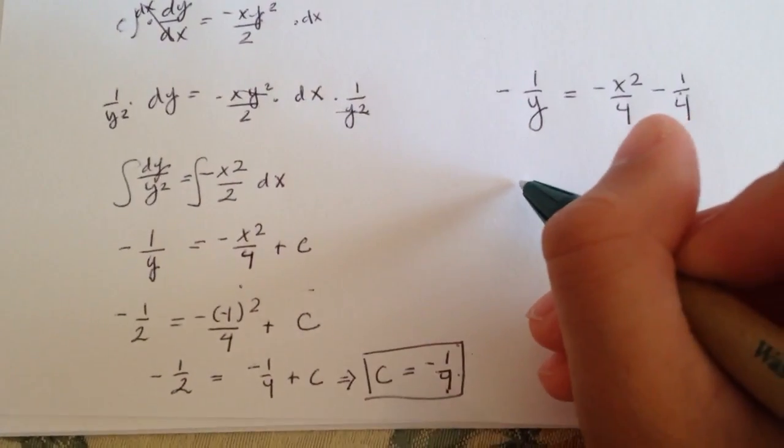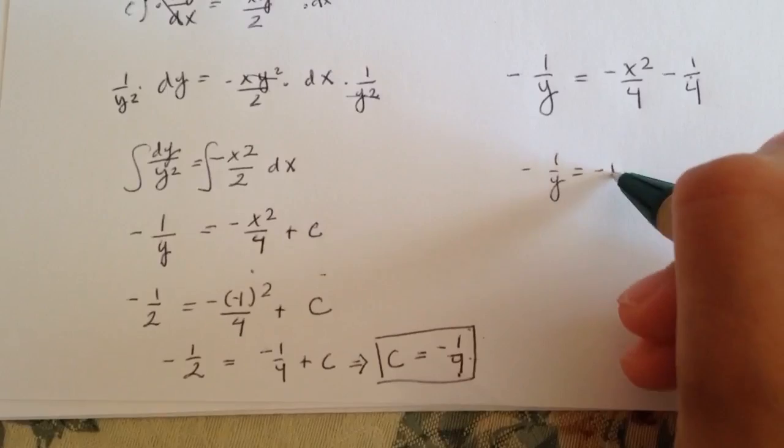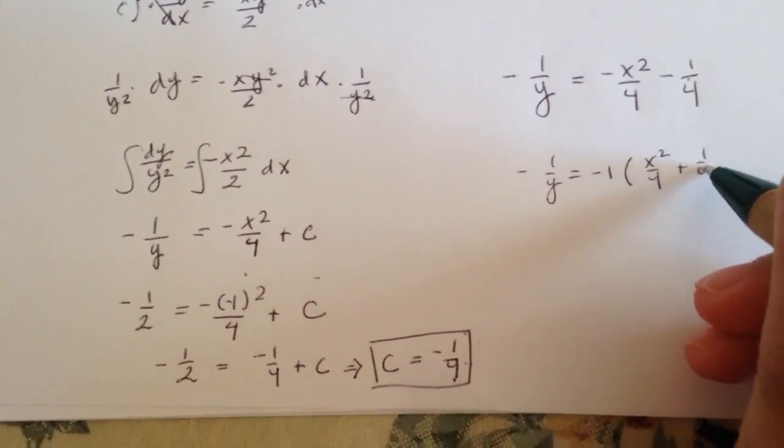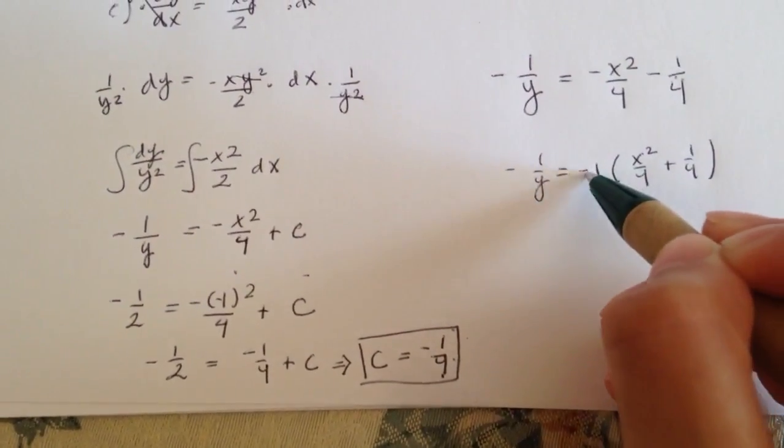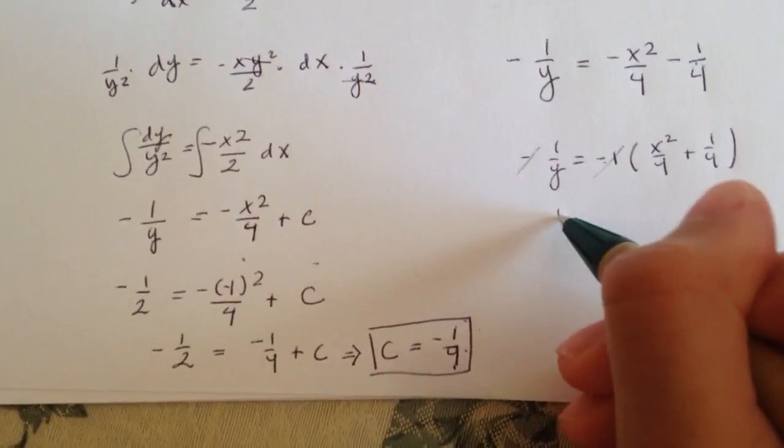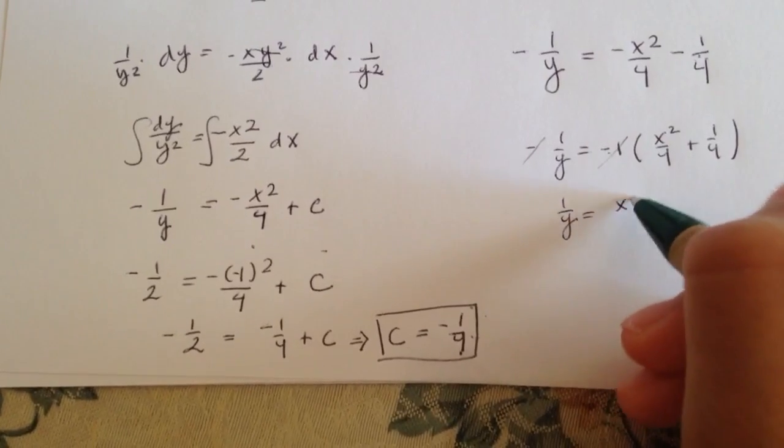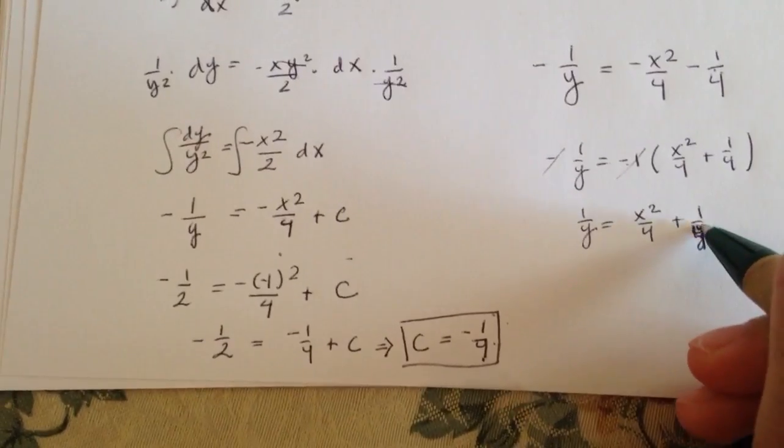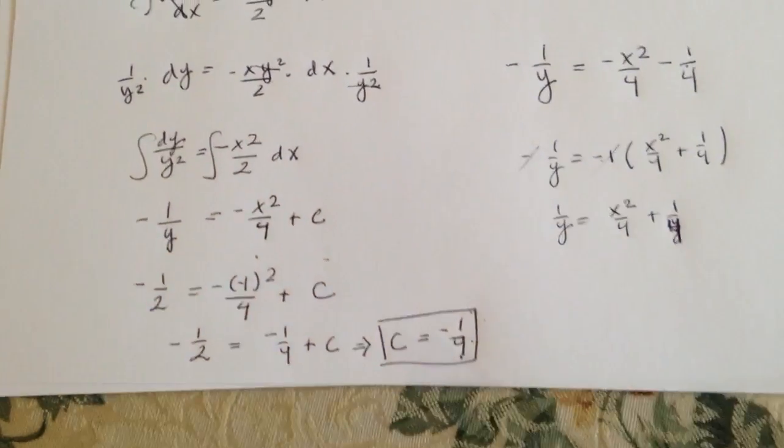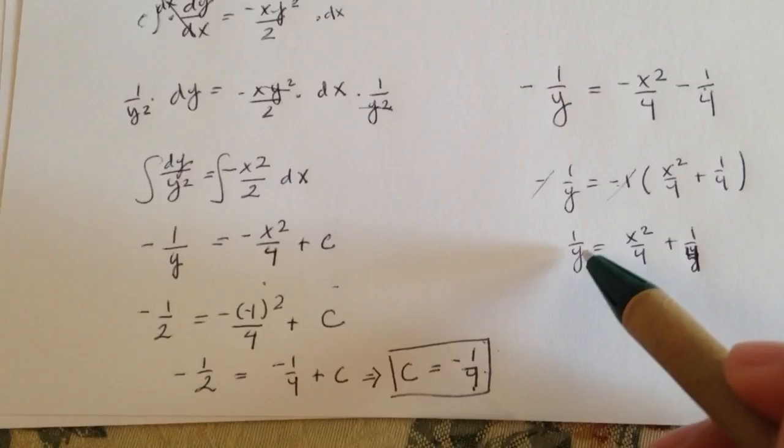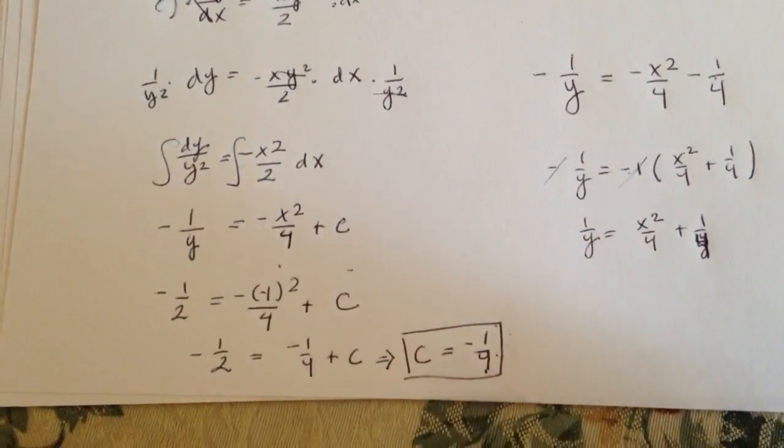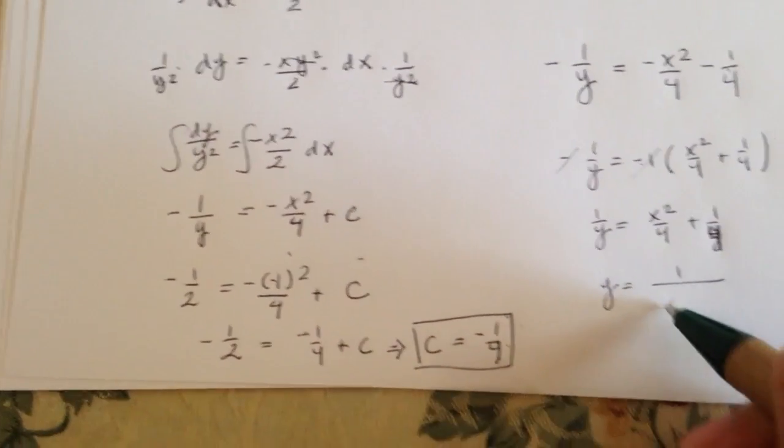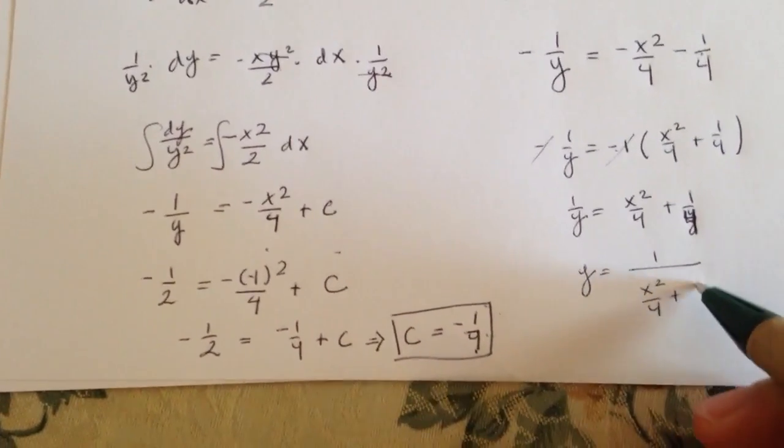So simplify it. Negative 1 over y. Check out negatives because you're both negative. So now at this point, you've got to get y by itself. Solve for it. So then you'll get y will equal 1 over x squared over 4 plus 1 over 4.